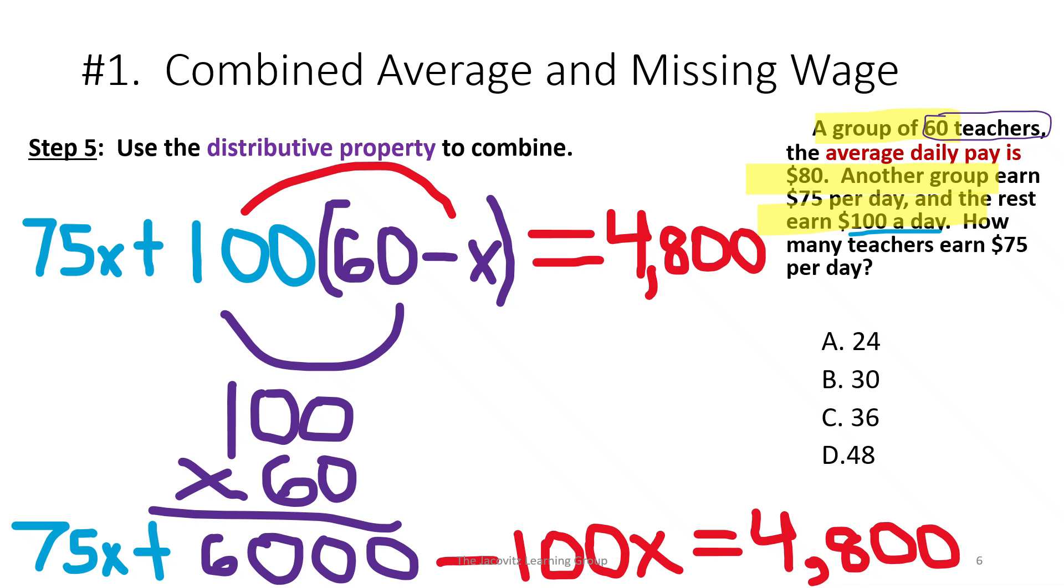On the next slide, here it is done for you. You have 100 times 60, and then 100 times X, but this is a negative. So this negative comes down here and you get negative 100X. So now you have 6,000. You already had 75X over here, so you just bring it straight down and keep solving.